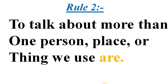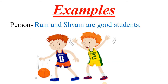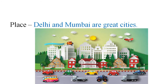Next rule is rule number two: to talk about more than one person, place or thing, we use 'are'. For example, for person: Ram and Shyam are good students. We talked about two people — Ram and Shyam — so we used 'are' there.